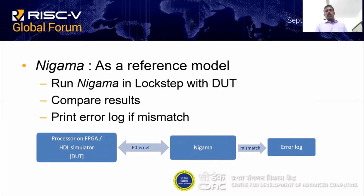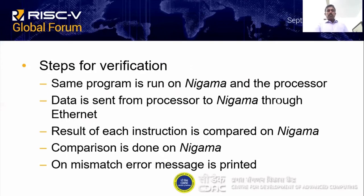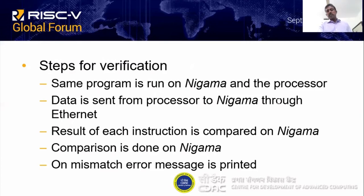We use NIGAMA as a reference model for debugging our processor. For debugging, we connect NIGAMA with the processor running on an FPGA or HDL simulator, and the interface between NIGAMA and the processor uses Ethernet. For verification, the same program is run on both NIGAMA and the processor. The result of each instruction from the processor is sent to NIGAMA through Ethernet, and NIGAMA compares its result with that of the processor. If there is a mismatch, an error message is printed on NIGAMA.